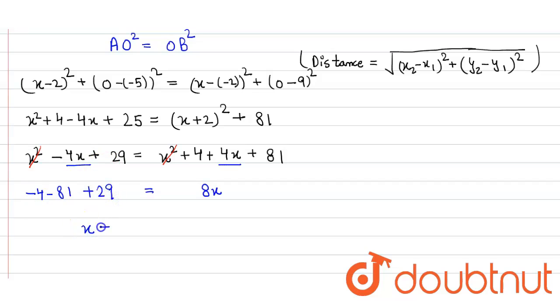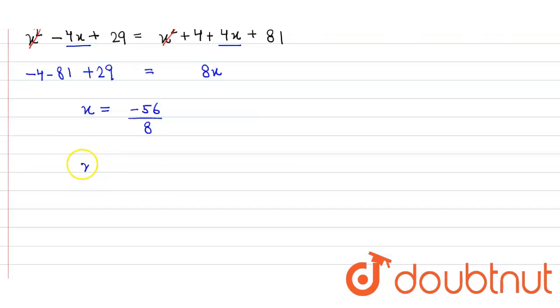So the value of x will be equal to, divided by 8, and in the numerator we get -56. So on further simplifying, we get the value of x is equal to -7.